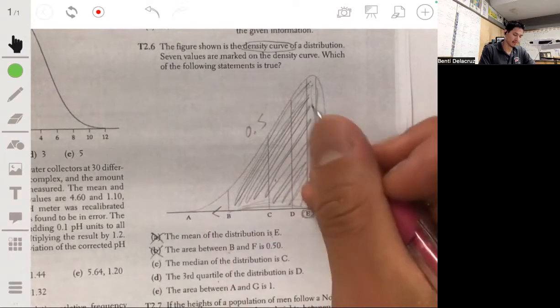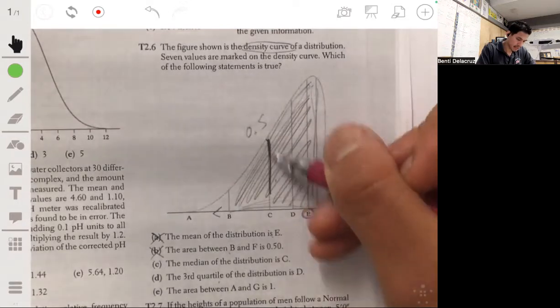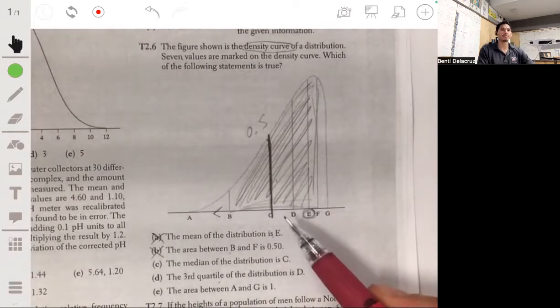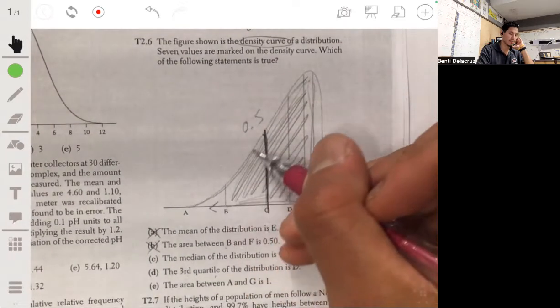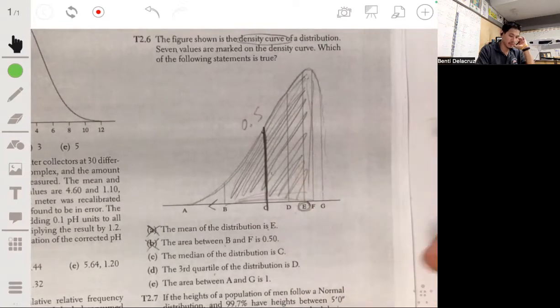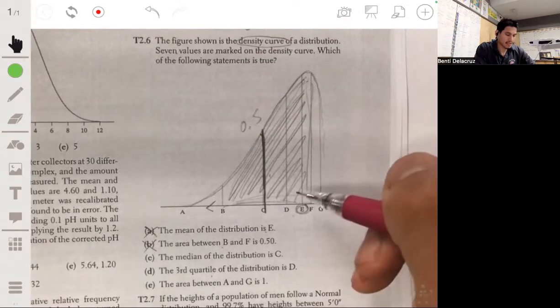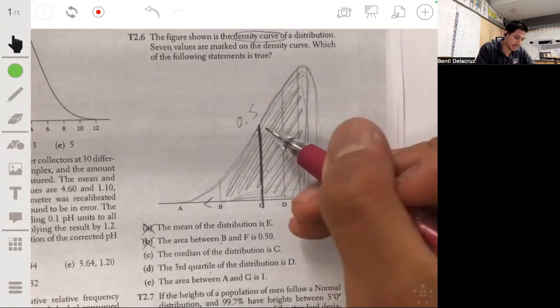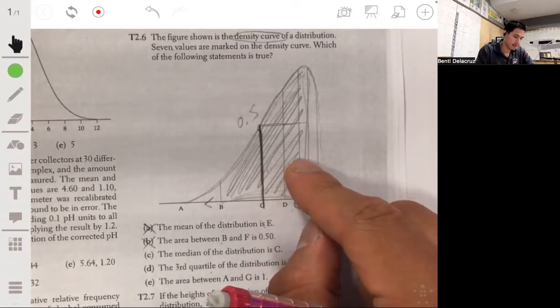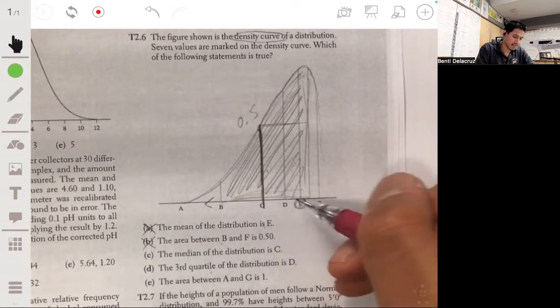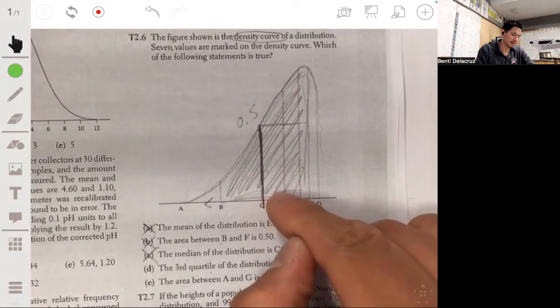The median of the distribution is C. The median is here. So this is probably the tricky one. The median is the equal areas point, so 0.5 has to be to the left and to the right of it. It's kind of hard to tell, but it's also clear that this area is much smaller than this area. The median would probably be somewhere between C and D. So the median, that would not be true. The median would have to be a little farther to the right.